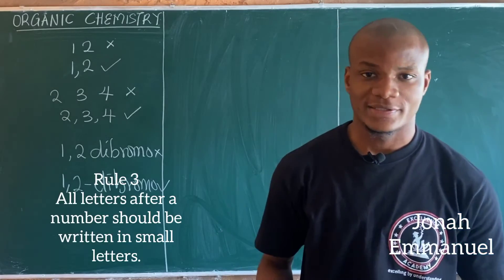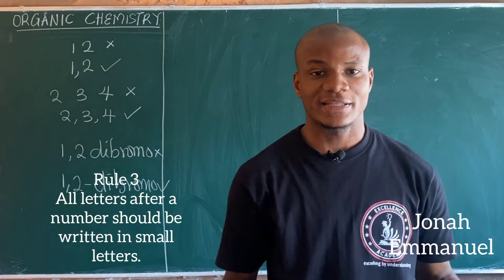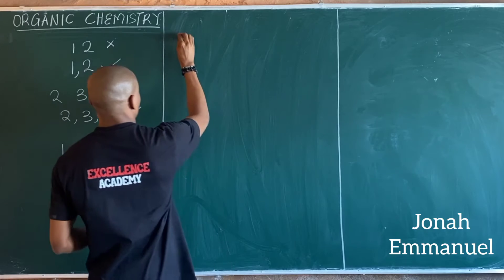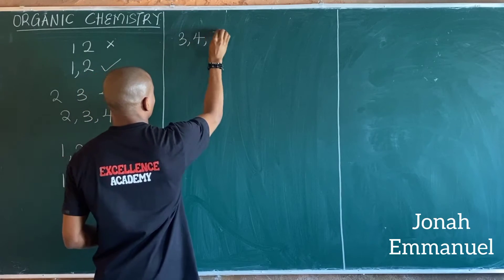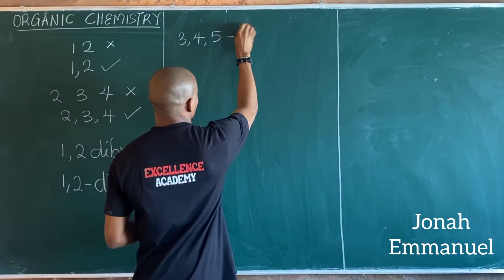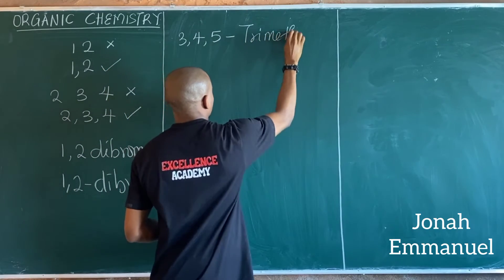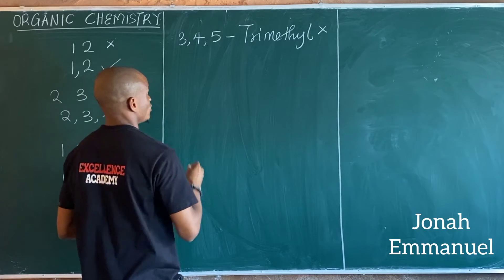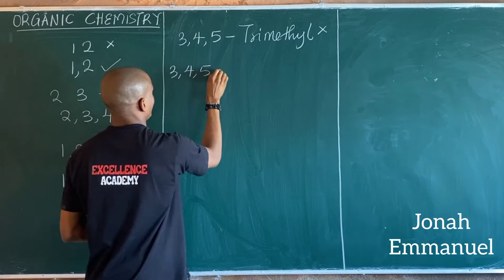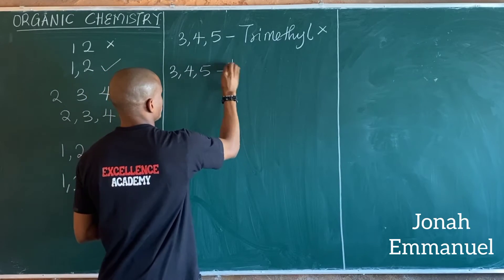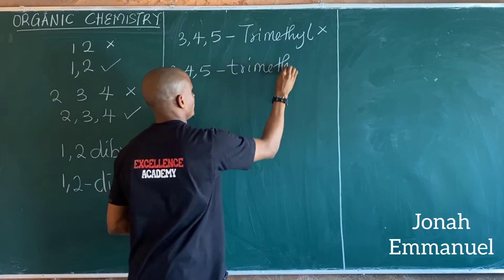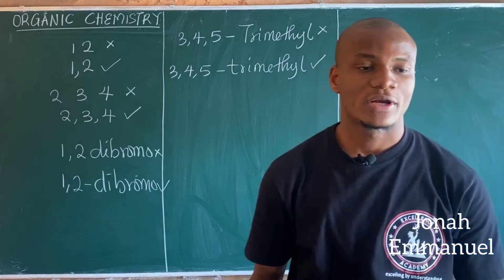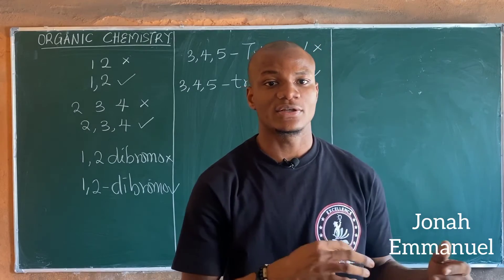The third rule: all letters after a number should be written with small letters. So if I have '3,4,5' and I want to say 'trimethyl', I don't write 'Trimethyl' with a capital T — that is wrong. All letters after a number should be written with small letters. So '3,4,5-trimethyl' is the correct way to write it. All letters after a number are written with a small letter.